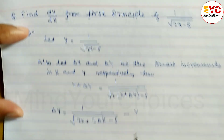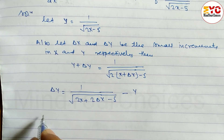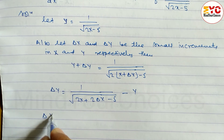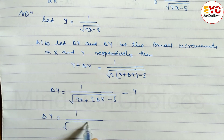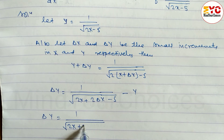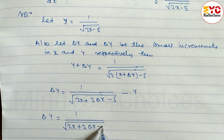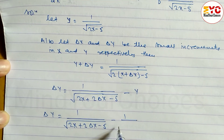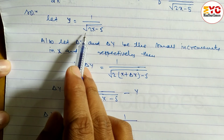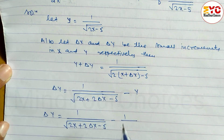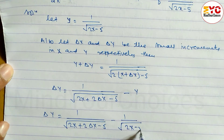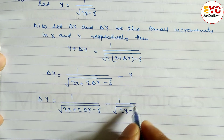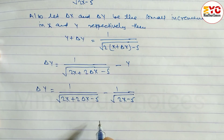Now we have to put the value of y. So del y is equal to 1 over root under (2x + 2 del x - 5) minus y, which is 1 over root under (2x - 5).